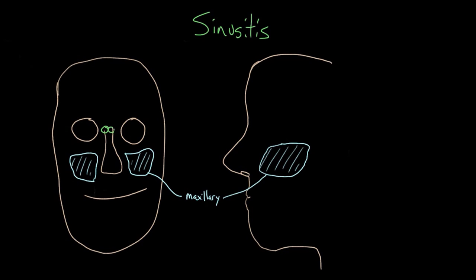Another set of sinuses lives at the top of your nasal cavity, and is composed of multiple little air cells — multiple little bony chambers filled with air. These are a little bit irregular, and everybody's are a little bit different, but they kind of look about like this. There's usually two layers or so of them, and these are called the ethmoid sinuses, also known as the ethmoid air cells.